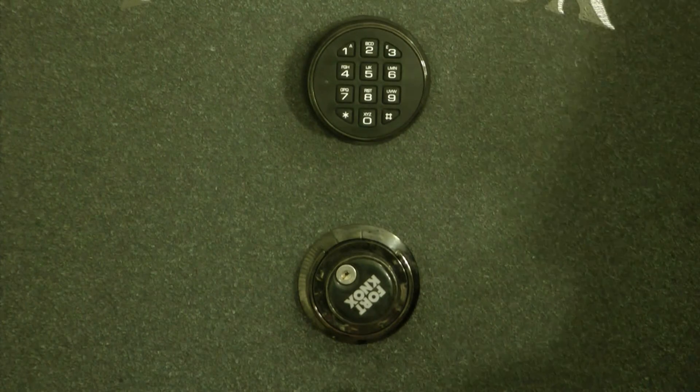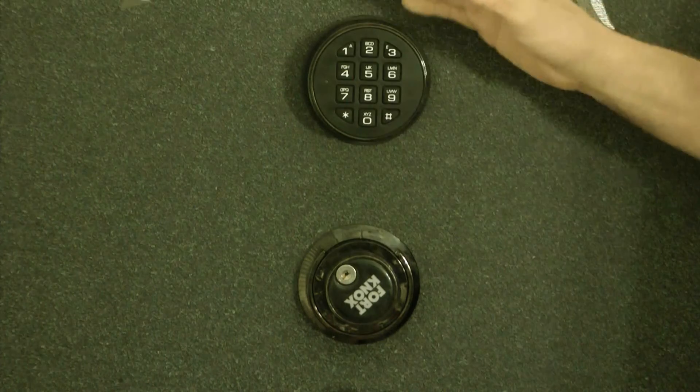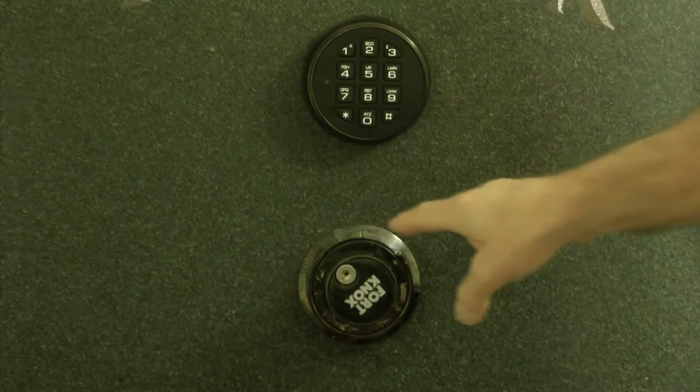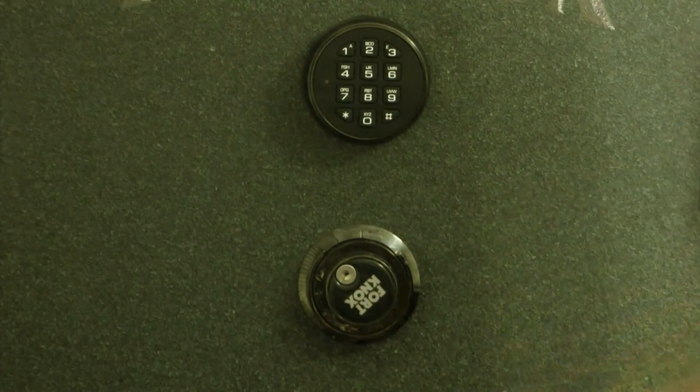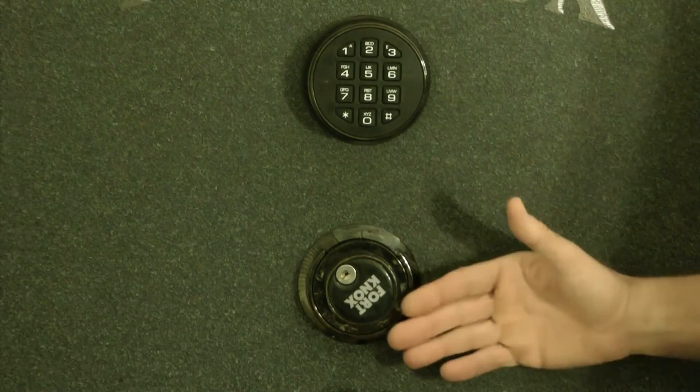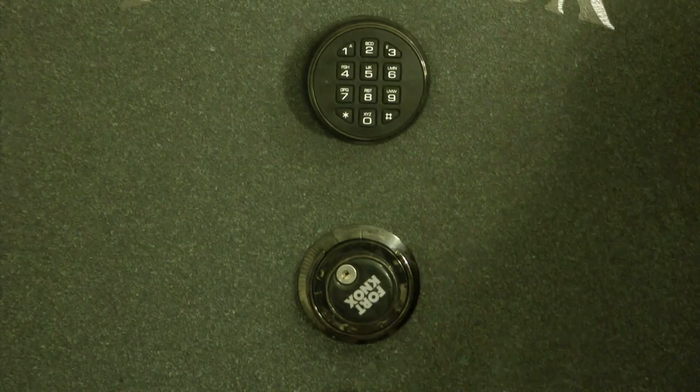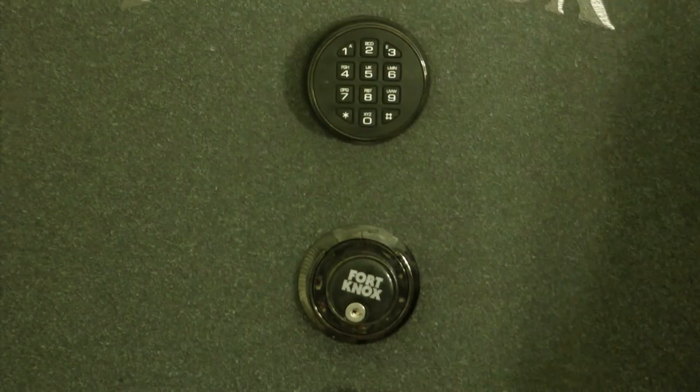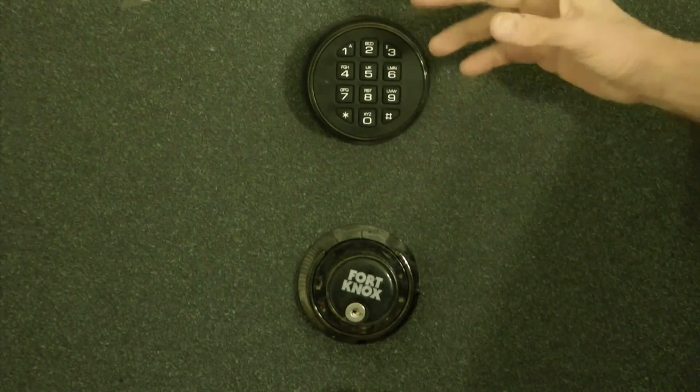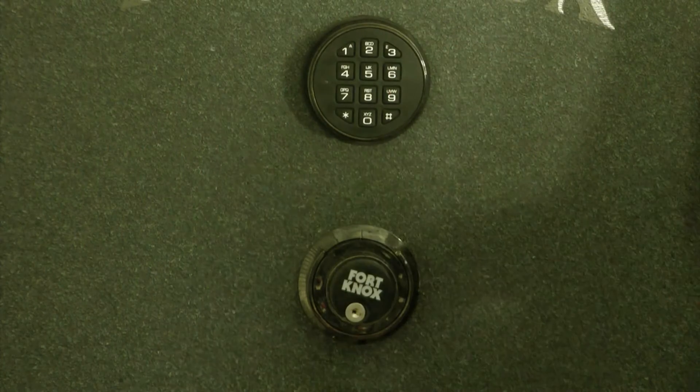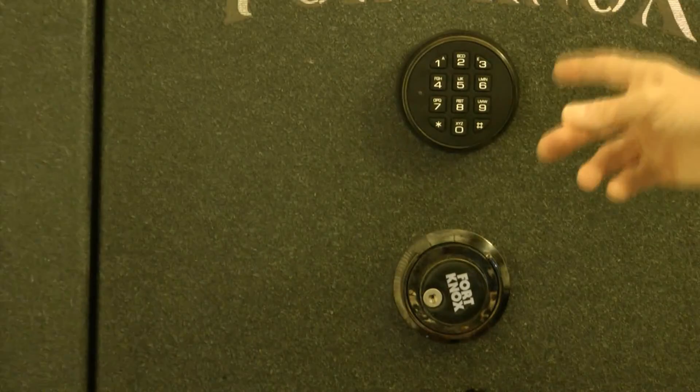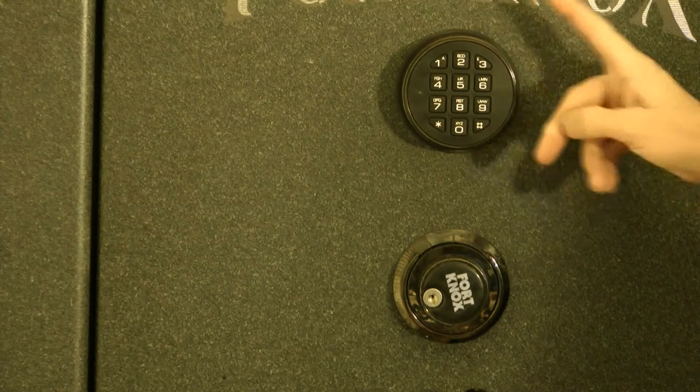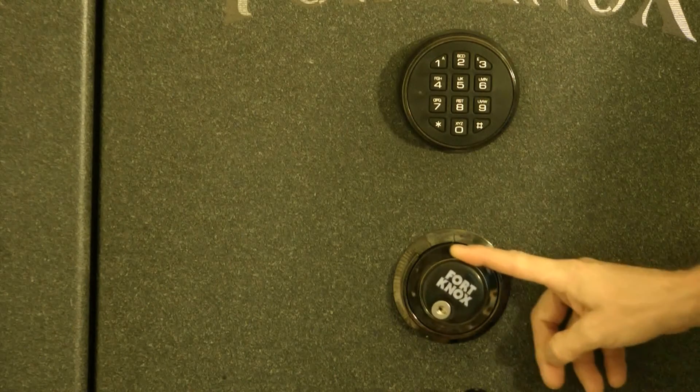When you're deciding on getting a safe, you should get a redundant lock system like this. This one has a combination and it has the electric. And then this way, you can always use this. It's very easy to use. Your electronic and then this is your standard.